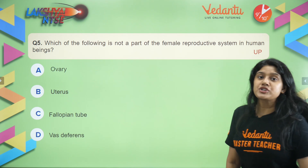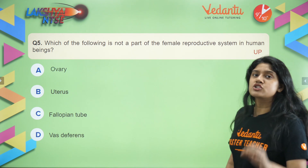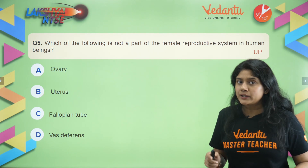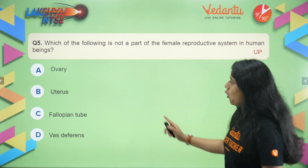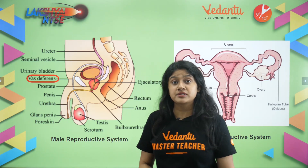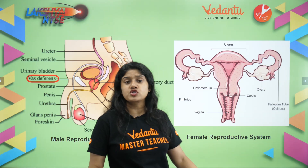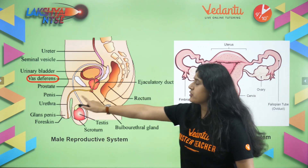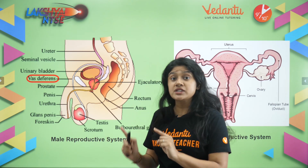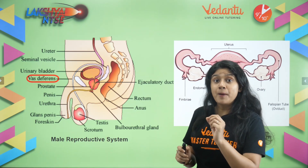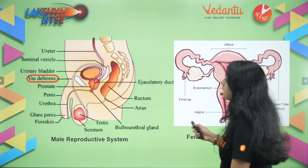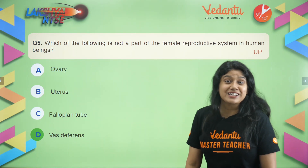Question number five: which of the following is not a part of the female reproductive system in human beings? The options are ovary, uterus, Fallopian tube, and vas deferens. Vas deferens is a part of the male reproductive system, not the female. In females we have the uterus, ovaries, and Fallopian tubes. Vas deferens carries sperms from the testes to the penis. So option D — vas deferens — is the correct answer.